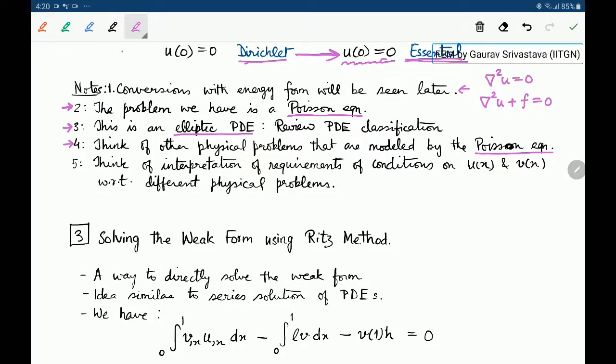As an exercise, you may think about what are some other physical phenomena that are modeled by the Poisson equation. And with respect to those physical phenomena, you can think about what are the interpretations of requirements for conditions for u(x) and v(x) with respect to different physical problems.